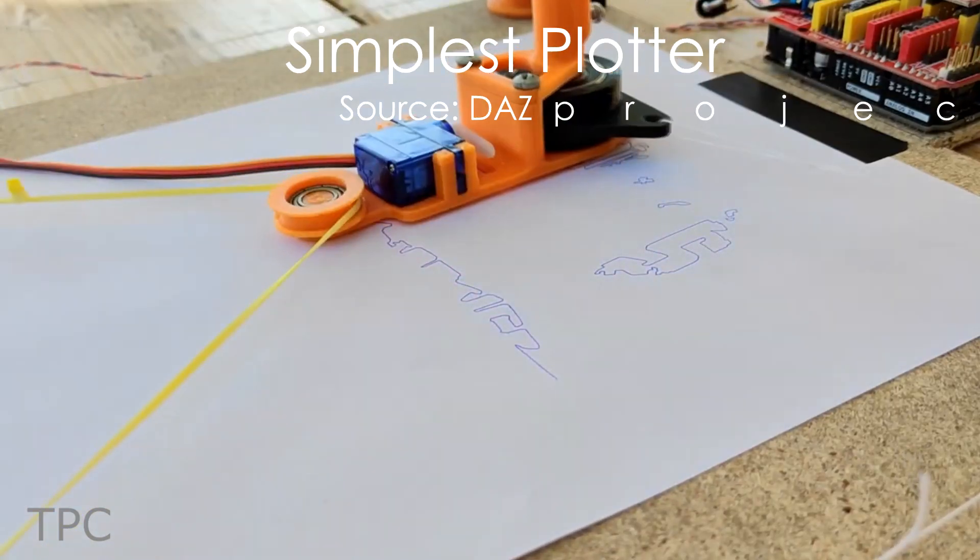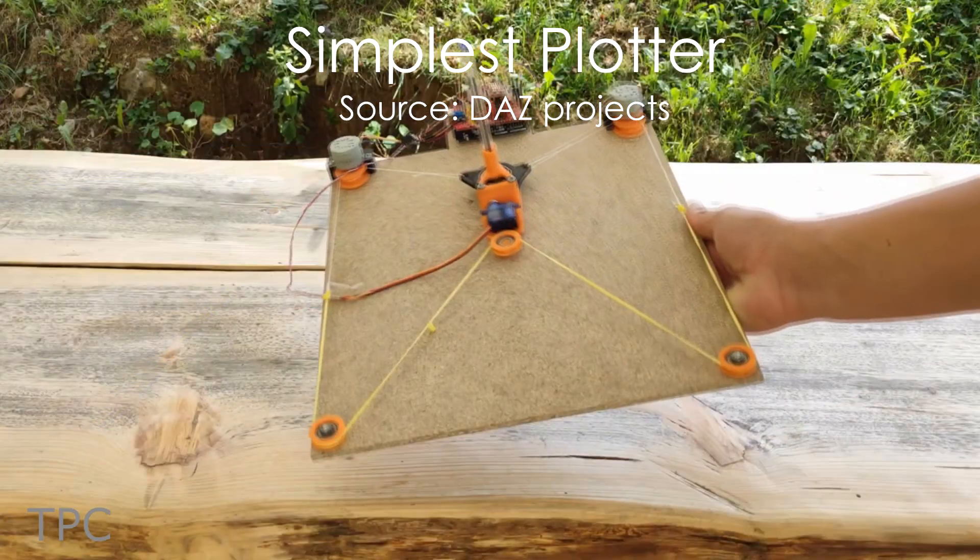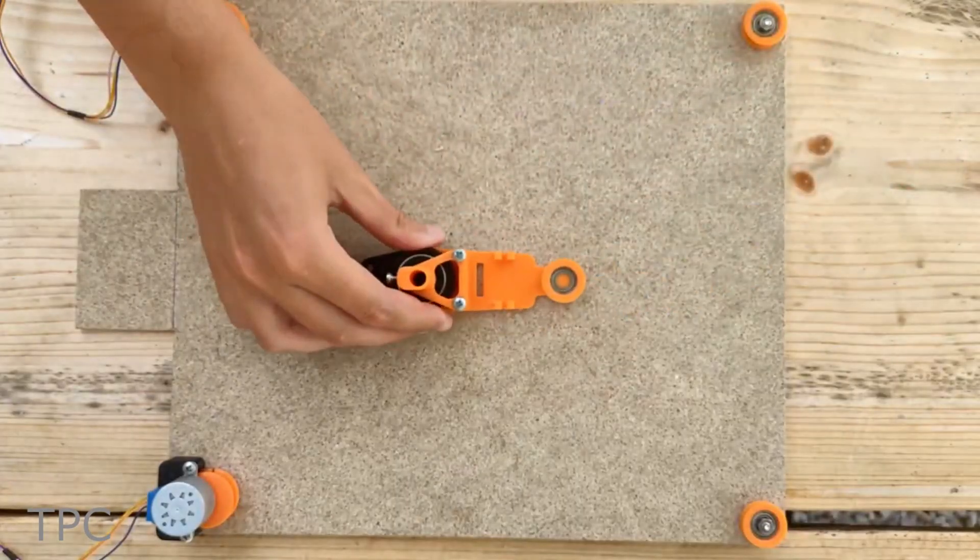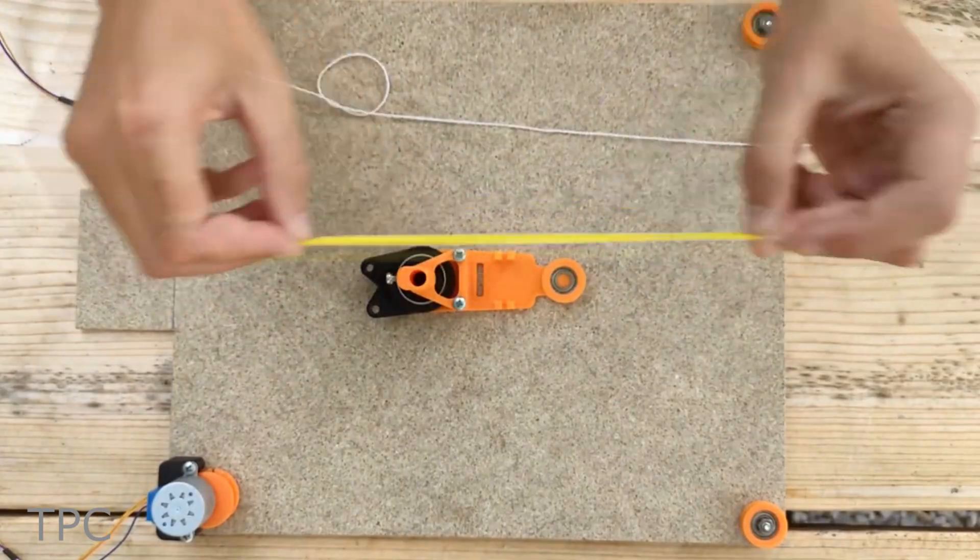You might have seen many plotters and other motion machines, but this one is one of the simplest among them. With some 3D printed pulleys and a simple core XY arrangement, you can build this one in no time.